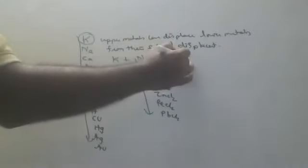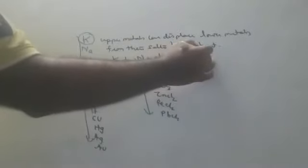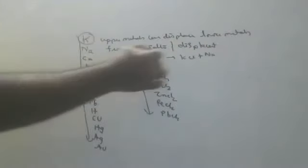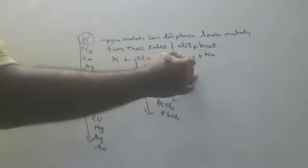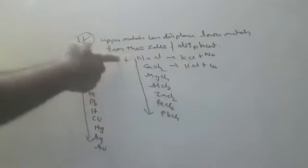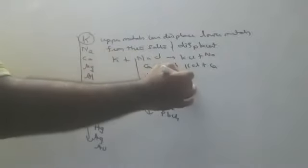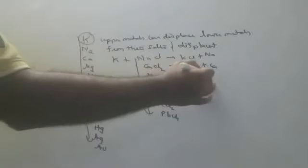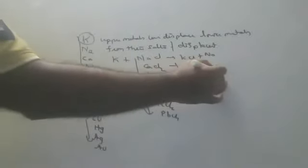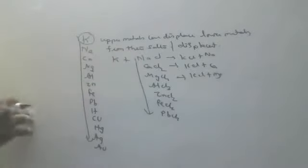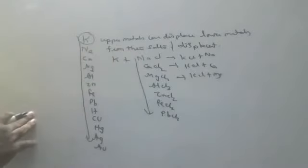So what you will get: K + NaCl gives KCl + Na; K + CaCl2 gives KCl + Ca; K + MgCl2 gives KCl + Mg. Because more reactive metals displace less reactive metals from their salts.